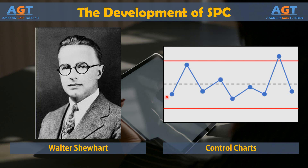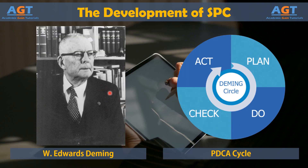During the same time period, W. Edwards Deming was working for the U.S. Department of Agriculture. A physicist and mathematician, Deming was in charge of teaching courses at the agency's graduate school and he arranged for Shewhart to come and speak there. Later, Deming brought Shewhart's statistical concepts to the United States Census Bureau, applying his theories outside of an industrial or manufacturing environment for possibly the first time.